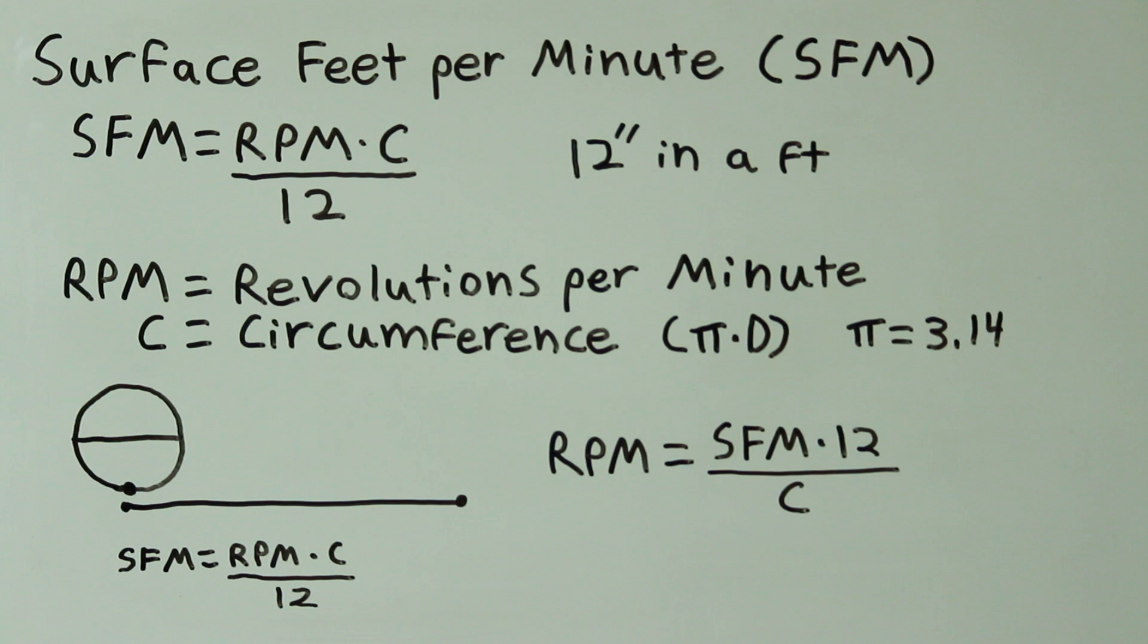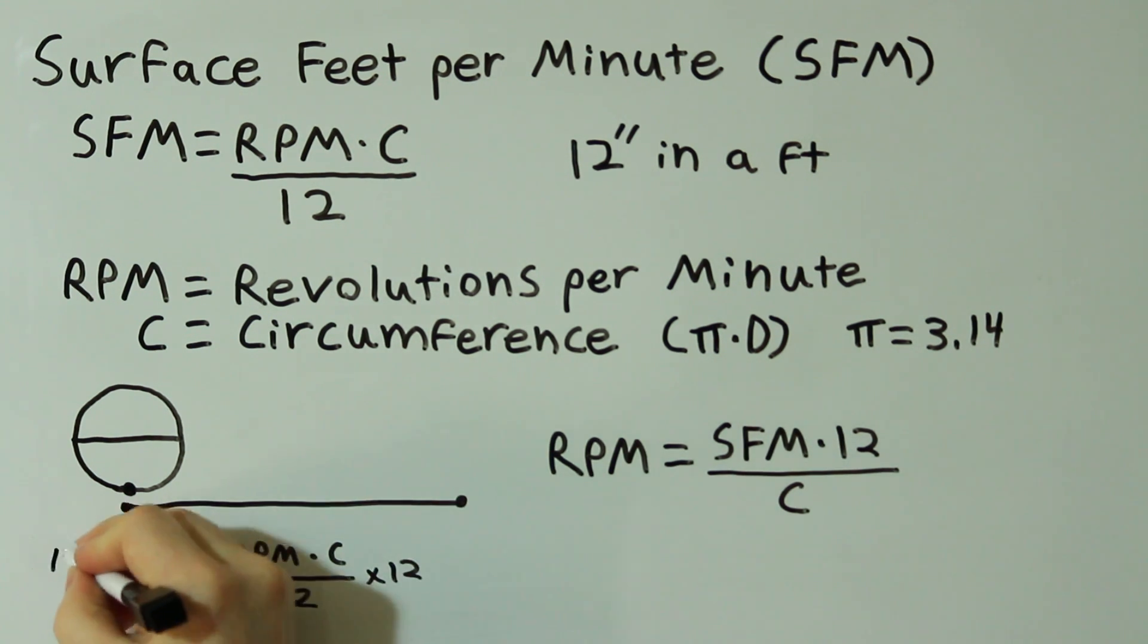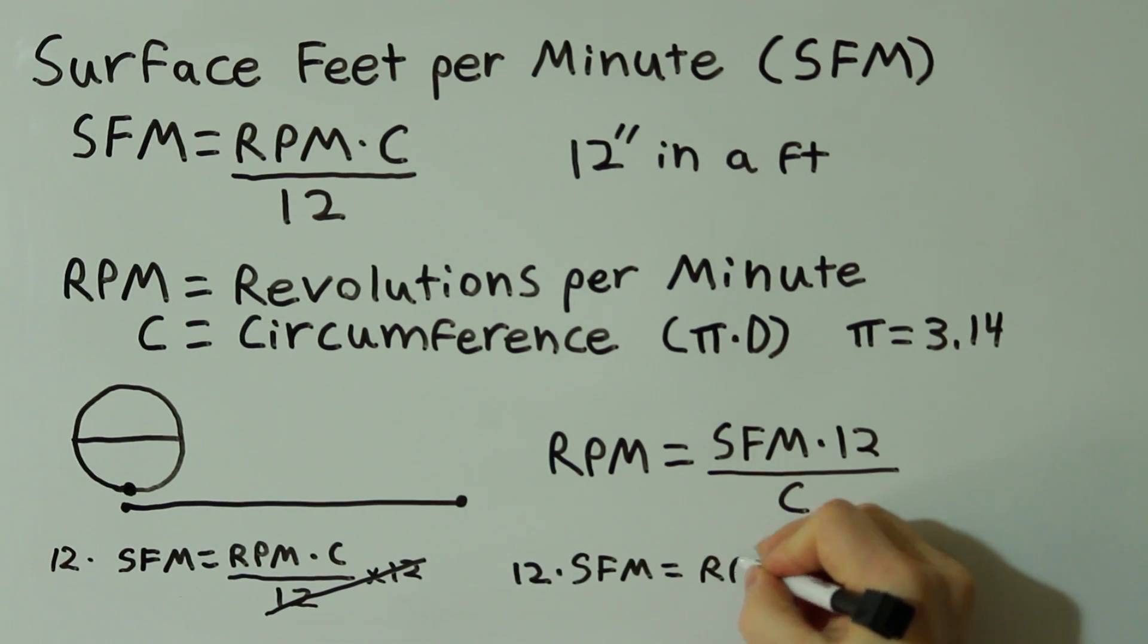To convert the surface feet per minute formula to the RPM formula, you multiply both sides by 12, then divide both sides by the circumference.